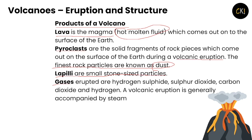Gases are also released during volcanic eruptions, especially hydrogen sulfide, sulfur dioxide, carbon dioxide, and hydrogen — these are important names to remember for exams. Volcanic eruption is generally accompanied by a lot of steam due to water vapor at very high temperatures.